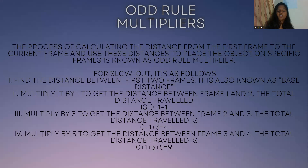Odd rule multipliers is the continuation of the odd rule. It is a process of calculating the distance from the first frame to the current frame, and we use this distance to place the object on a specific frame — this is known as the odd rule multiplier. For the slow out process: find the base distance between the first two frames, then multiply by 1 to get the distance between frame 1 and frame 2 — total distance traveled is 0+1. Multiply by 3 to get the distance between frame 2 and frame 3 — total distance is 4. Multiply by 5 to get the distance between frame 3 and frame 4 — total distance is 9.